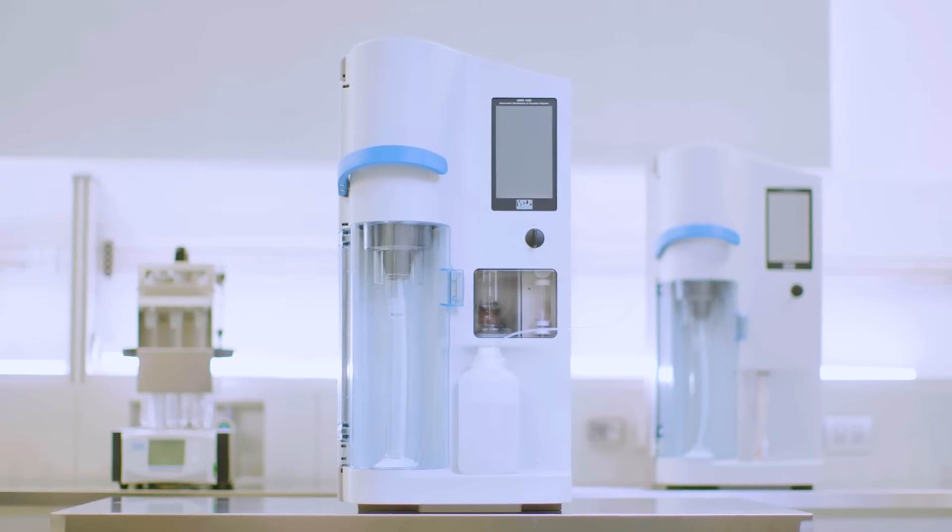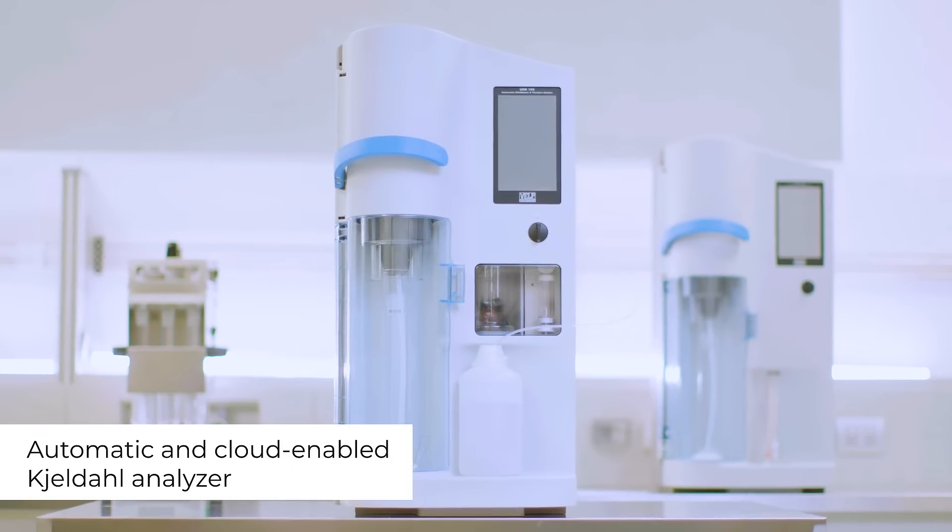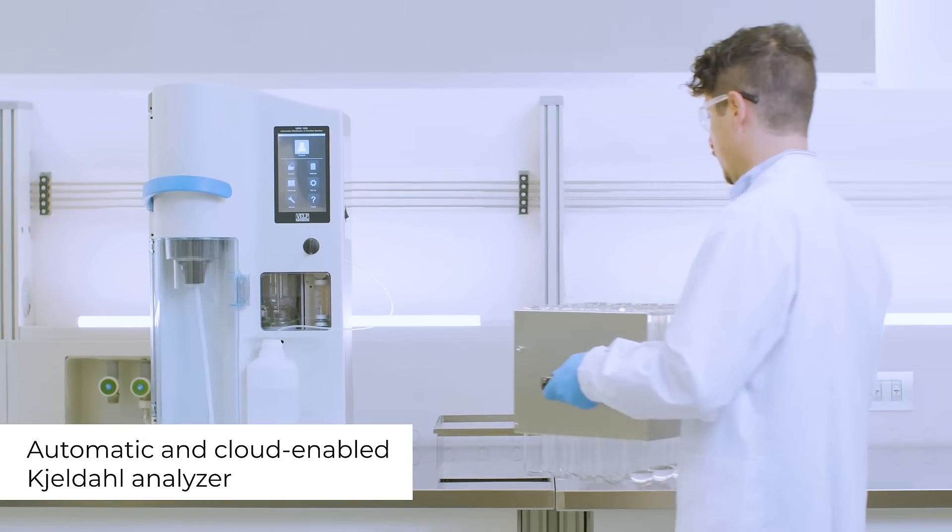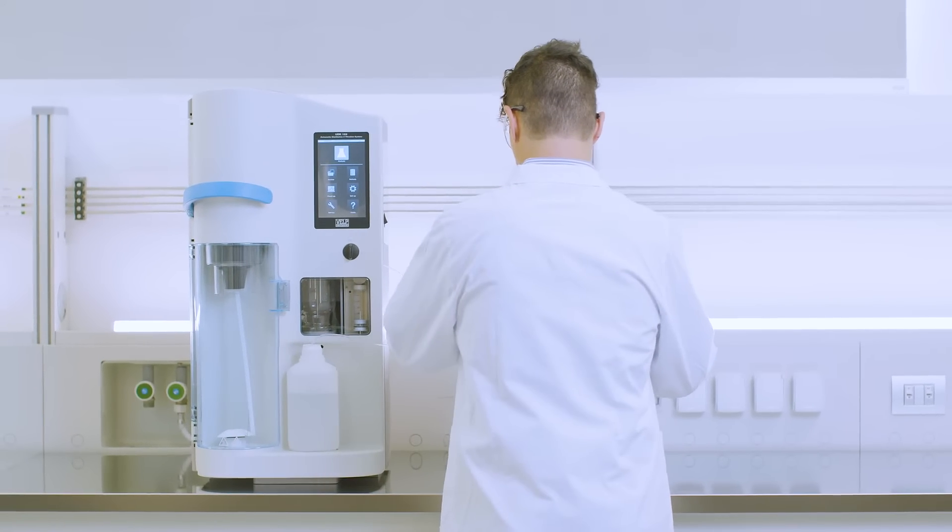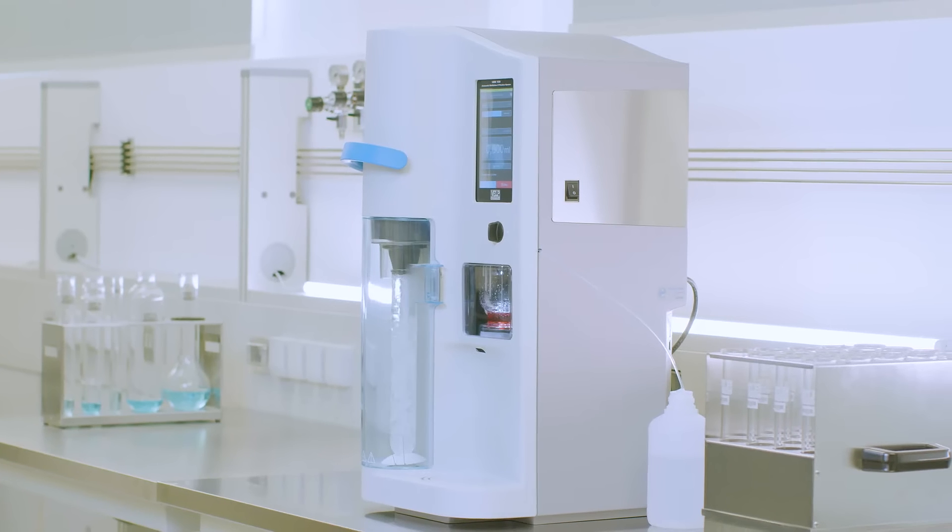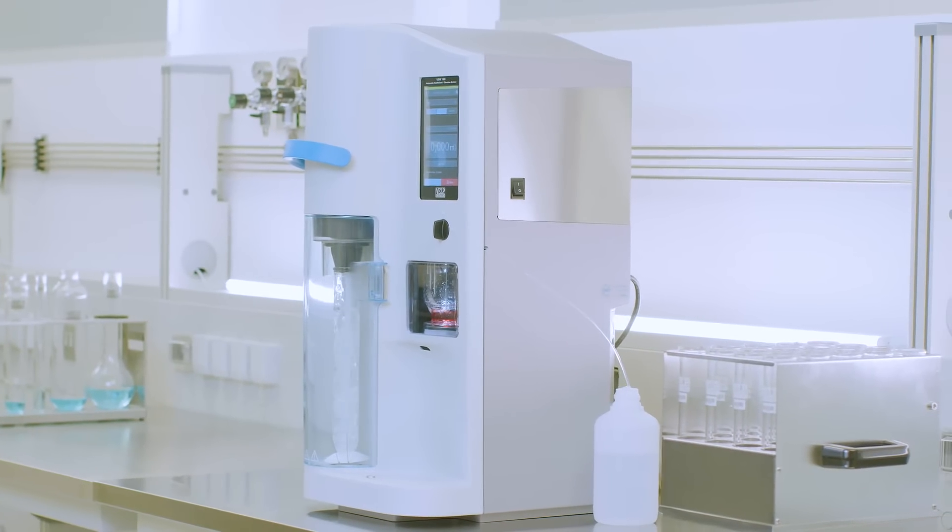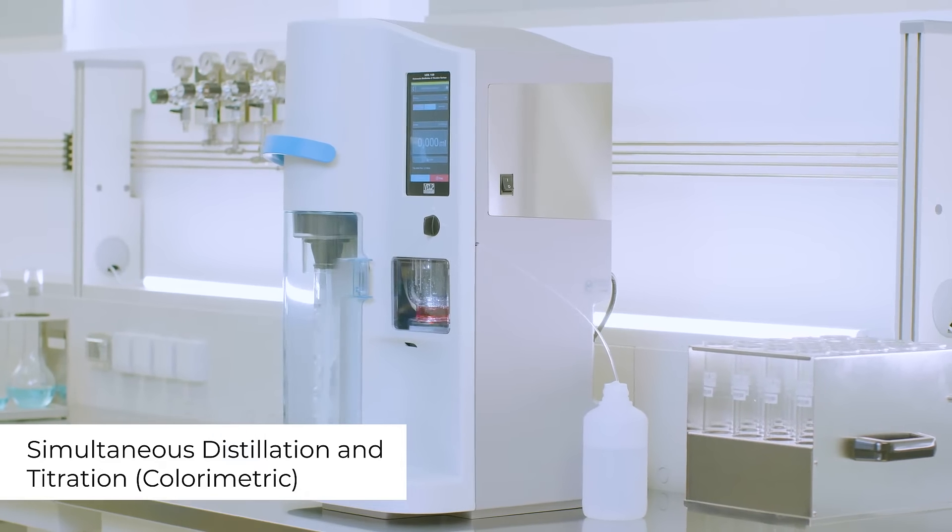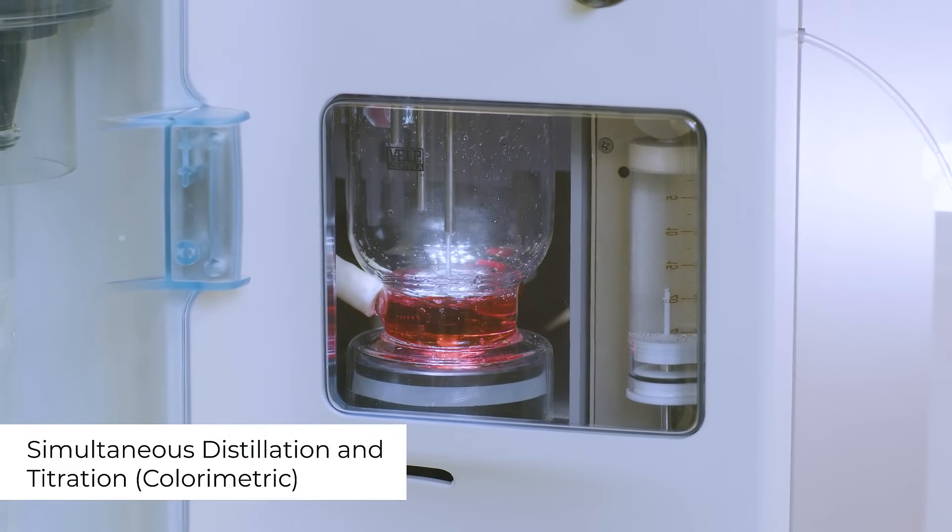UDK-159 is VELP's fully automatic and cloud-enabled Kjeldahl analyzer for the determination of nitrogen and protein following official methods. The UDK-159 incorporates state-of-the-art technology for simultaneous distillation and titration with an integrated colorimetric titrator.